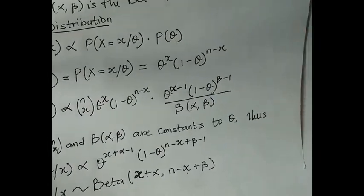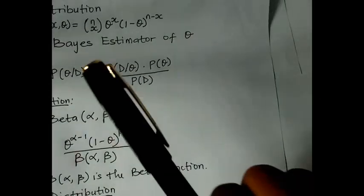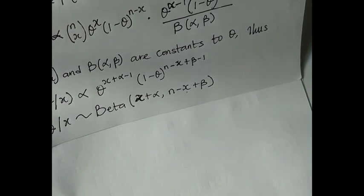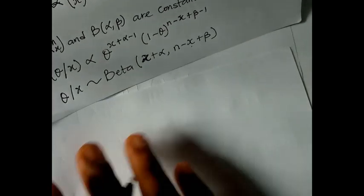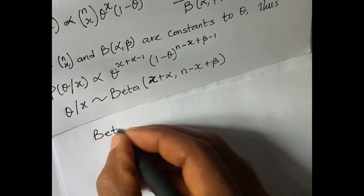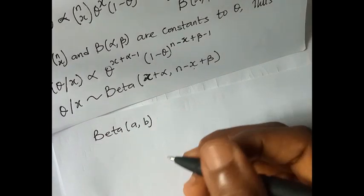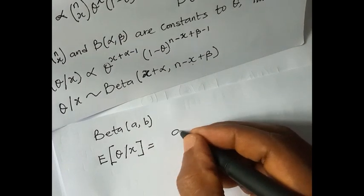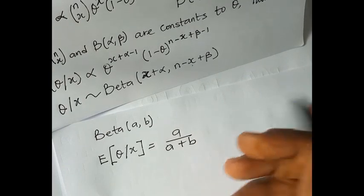We have not finished yet. Though we have derived the posterior, we are asked to find the Bayesian estimator of theta. Recall that the Bayesian estimator under the squared error loss function is the mean of the posterior distribution. For a beta distribution Beta(a, b), the mean is a / (a + b).